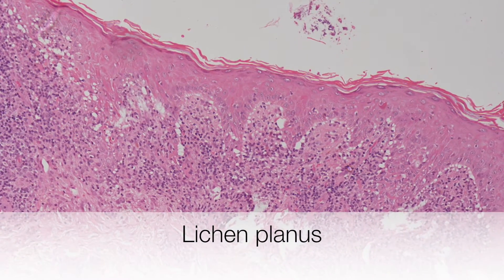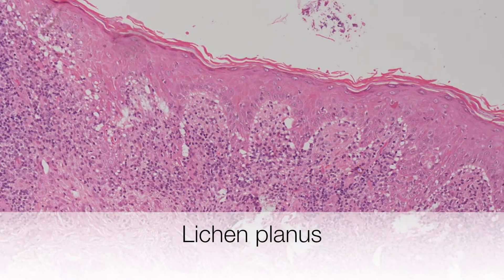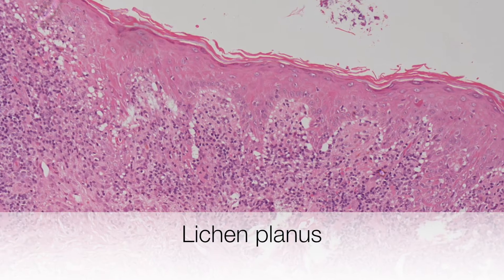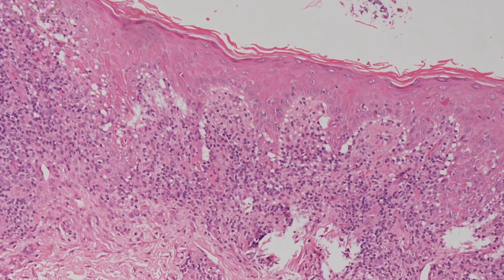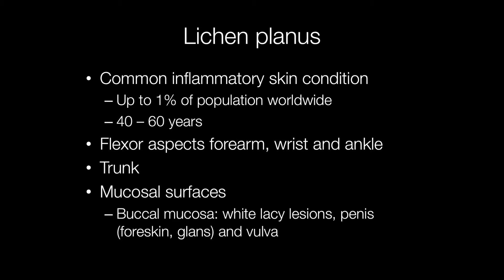This skin biopsy shows the typical appearances of lichen planus. Lichen planus is a non-infectious common inflammatory skin condition that affects probably between 0.2 and 1% of the population worldwide, and the age it tends to occur at is between 40 and 60 years old.